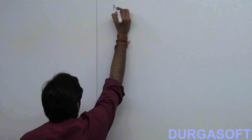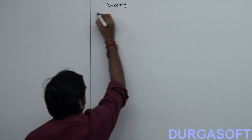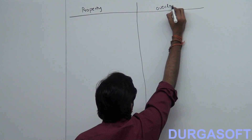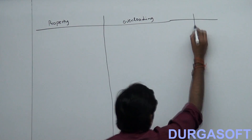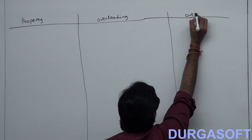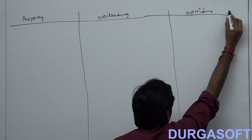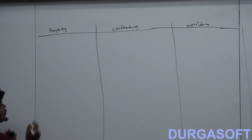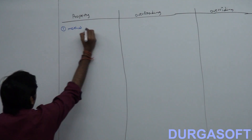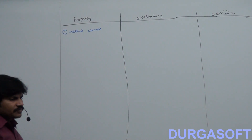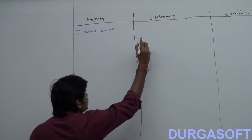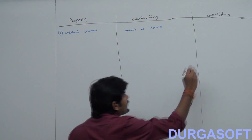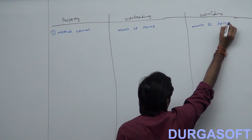With respect to which property you want to compare or differentiate — property in the first column, second column overloading, and the third column overriding. First point: method names. If you consider method names, in overloading method names must be same. And in overriding also, method names must be same.